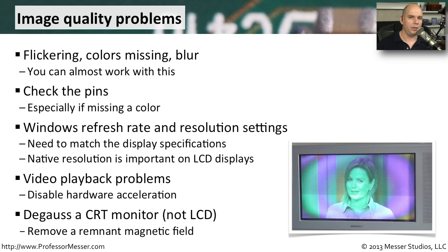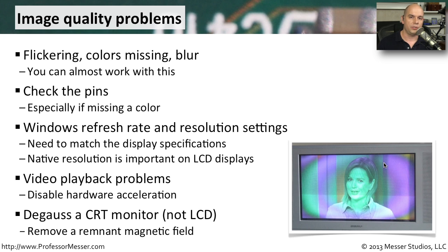If you're still using a cathode ray tube, you may find that magnetic field distortion causes the tube to have discolorations or distortions. One way to resolve this is to use a degaussing tool — either an external one used by professionals, or some displays have the degaussing function built in. Simply push the degaussing button and it will degauss internally. After degaussing, those strange colors or distortions should be cleaned up because you've removed that remnant magnetic field.